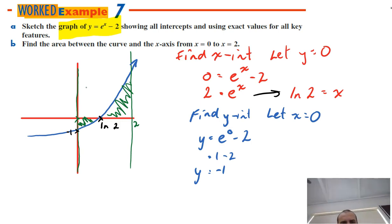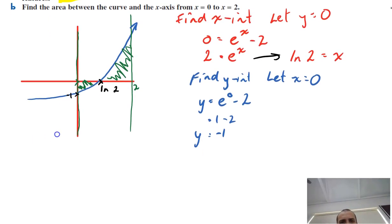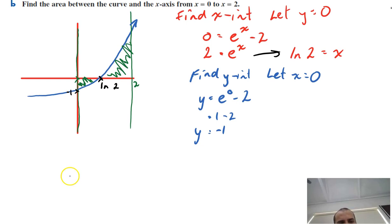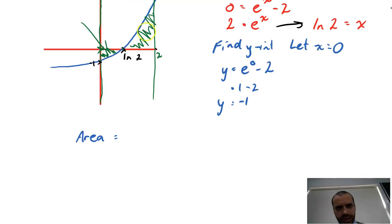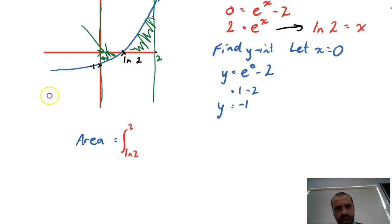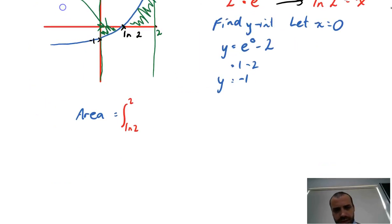And the way that I'm going to do it, there's a couple of different ways that you can do it, but I just need to write in my area. So the area is going to be equal to... I'll deal with this bit first, this bit here. So it's the integral between 2 and ln2 of our function, which is e to the x minus 2.